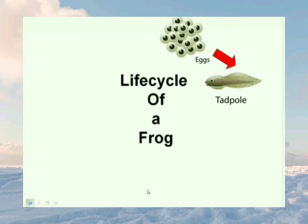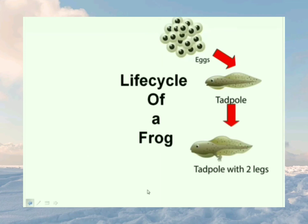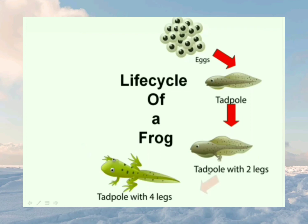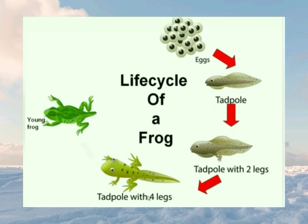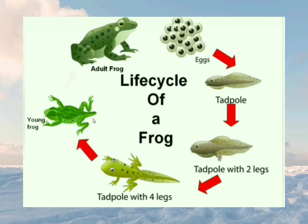After a few days, tadpoles develop hind limbs and fore limbs — first two legs develop, and after a few more days all four legs are developed. Then they grow into young frogs having tails — you can see the tail in the young frog. As they grow, they look similar to their parents. In the next few days the tail also disappears, and an adult frog is formed. The adult frog lives on land and reproduces in water.